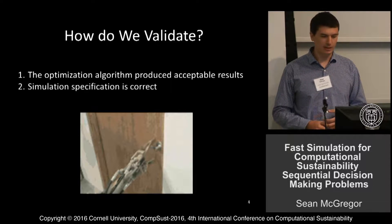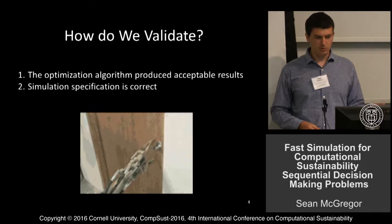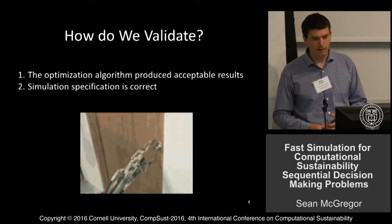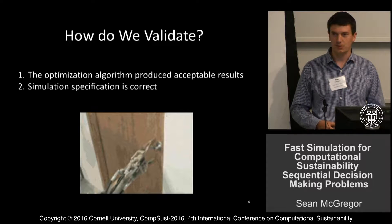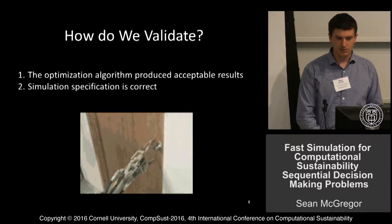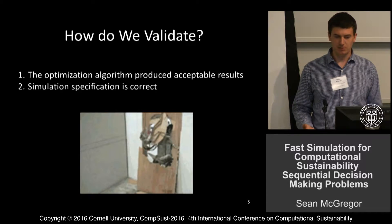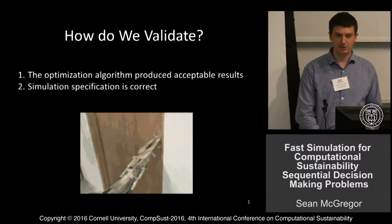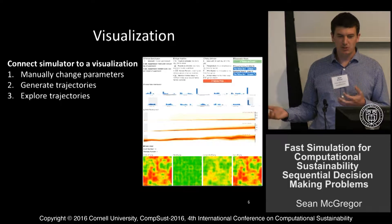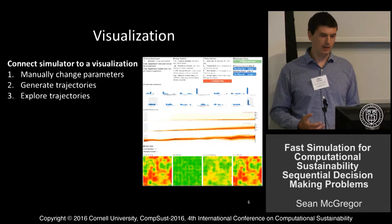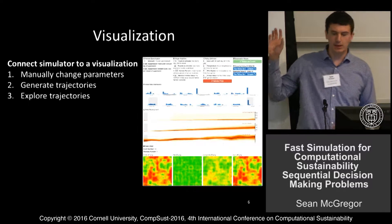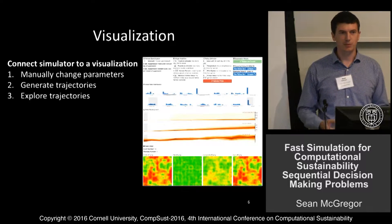Concentrating on the validation task, which in many ways is more challenging than optimization — I'll tell you why. Two things we can do to validate are: checking whether the optimization algorithm produced acceptable results, or whether the simulation specification is actually correct. In robotics this is simpler — there's an intuitive basis for when something fails; if a robot busts through a door, there's a problem. But in computational sustainability, we don't always have an intuitive basis to know whether we're doing well. So we use visualization — a tool we built called MDPViz for Markov decision processes.